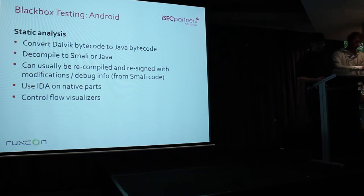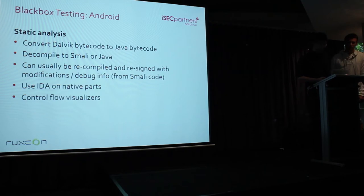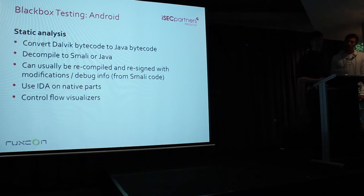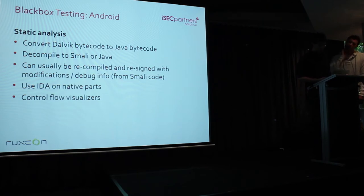Static analysis is also useful, especially in parallel with dynamic analysis. The goal is to convert an Android binary to more readable code. You can decompile into Smali code — a simple assembly-like syntax with Dalvik opcodes — or decompile to Java by converting first and then using a Java decompiler. Decompiling to Smali is best if you want to modify and add debug information, then easily recompile and re-sign. Decompiling to Java is easier to read but can be inconsistent. For native libraries used for crypto functions, you may need to hook into them via the Java Native Interface. Tools like IDA Pro help read ARM instructions, and AndroGuard can visualize the control flow of an application.